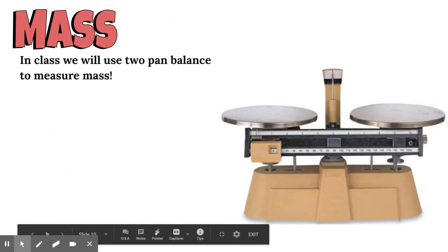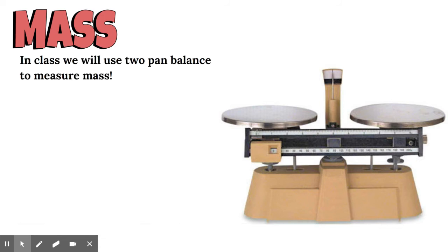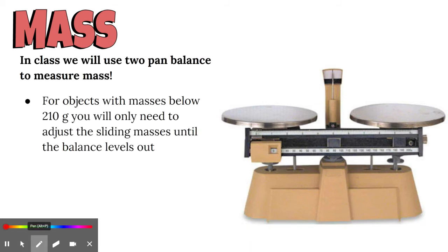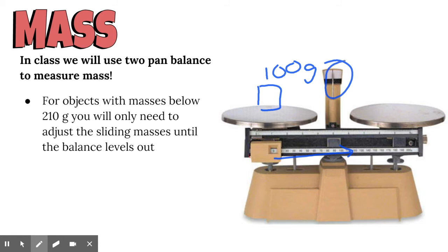When we look at a two-pan balance, this is what we have in class to measure mass. For objects with masses below 210 grams, you'll only need to adjust the sliding masses on the balance. These two masses slide up and down to adjust and balance out something we would put on the pan. If we put a box on the pan that's a hundred grams, we move the sliding masses until this arrow, this little needle, balances out again. Then we can read where the sliding masses are, and that tells us how much mass that object has.